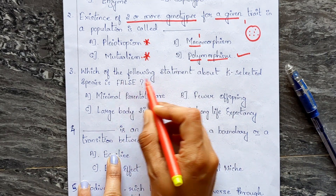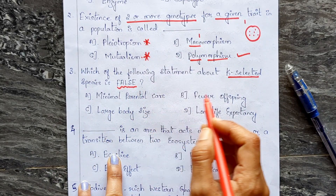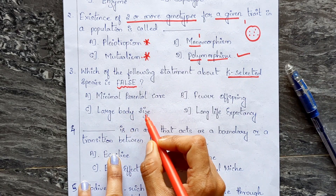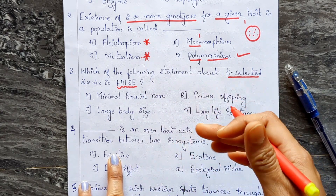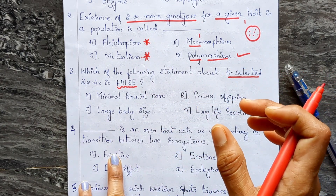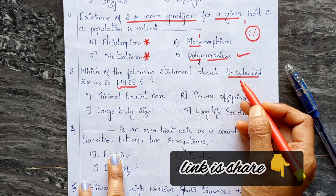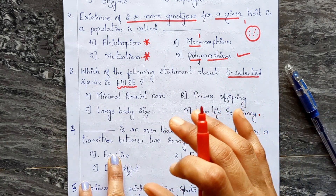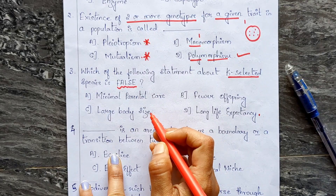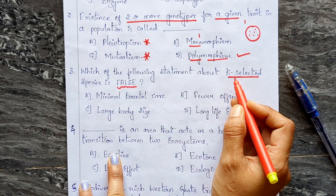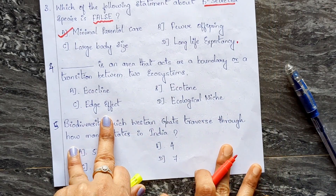Third question: which of the following statements about K-selected species is false? Options: A) minimal parental care, B) fewer offspring, C) large body size, D) long life expectancy. K-selected and r-selected species are an important topic — there is typically at least one question on this each year. The correct answer is A — minimal parental care is false for K-selected species, which actually show extensive parental care.